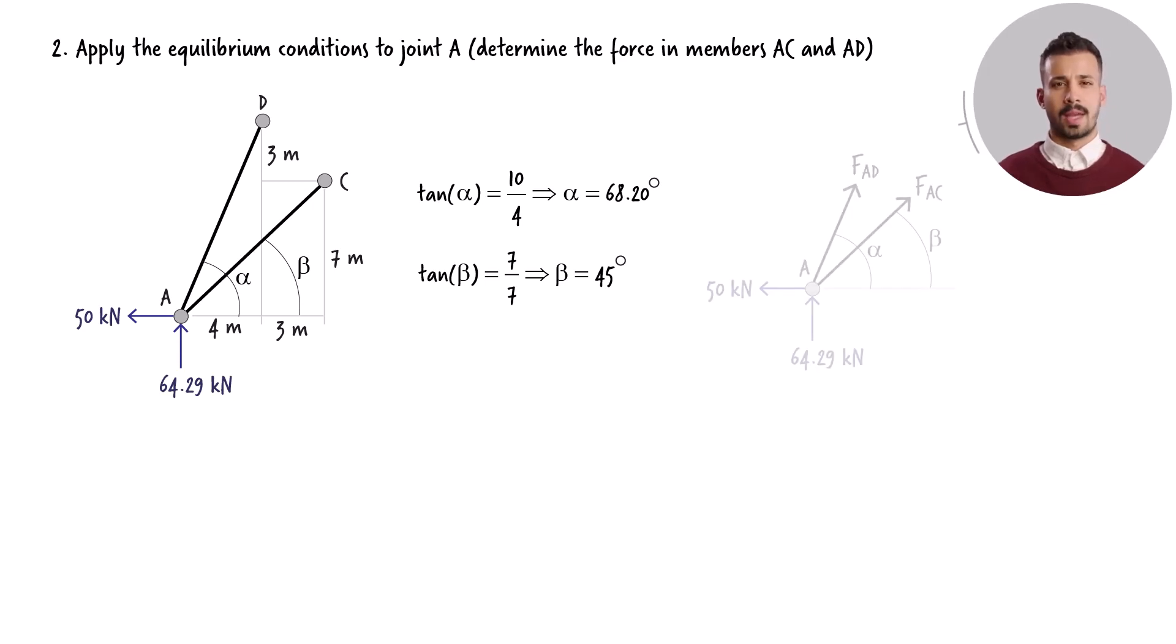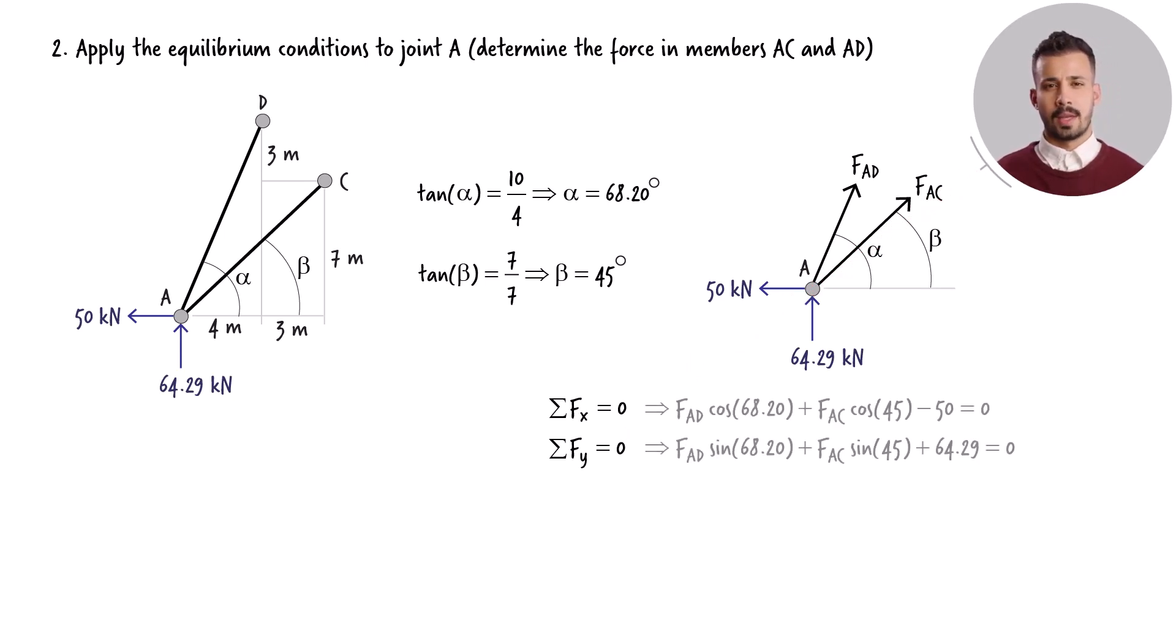Here's the free-body diagram corresponding to joint A. Two equilibrium equations can be formulated for this joint. Both the net forces in the x-direction and the y-direction have to equal zero. In the expanded form, these equations become: